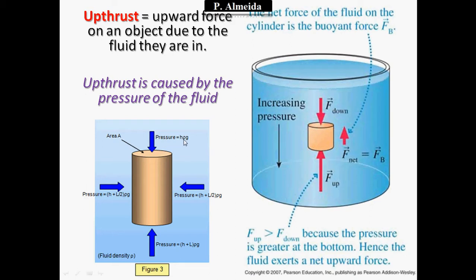Remember from previous videos: pressure in liquids equals H, the height where the liquid is, times rho, the density of the liquid, times G, the gravitational field strength. This applies at the top of the object. When I go to the bottom of my object, I have exactly the same formula. However, H is now H — the initial height — plus L, which is the length of the full object. So I have a greater depth, meaning the pressure is always bigger on the bottom than on the top.